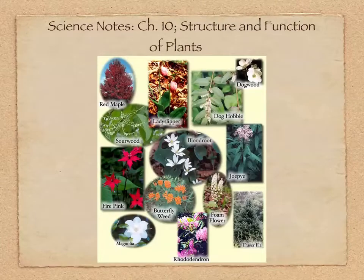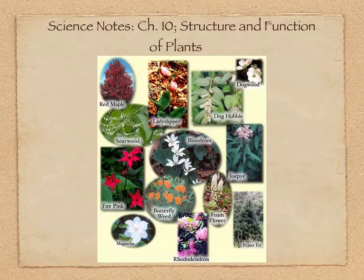Chapter 10 is all about plants, with a focus on what they look like and how they work — the structure and the function. There are many different types of plants and we'll be talking about some of the main ones, the different types of structure, what they look like and how they work. And just as we've been saying all throughout the year, form follows function — meaning that what they look like dictates what they do, what they look like relates to how they work.